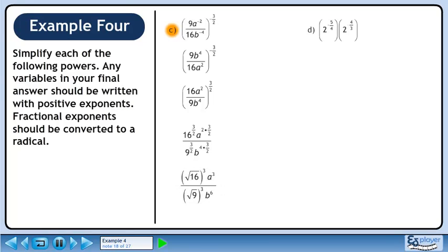We can write 16 to the 3 over 2 as the square root of 16 cubed. We can write 9 to the power of 3 over 2 as the square root of 9 cubed. The square root of 16 is 4 and the square root of 9 is 3. The answer is 64a cubed over 27b to the 6.